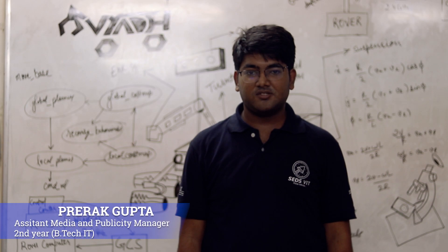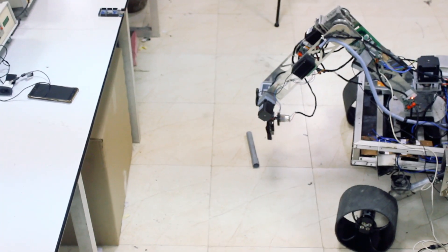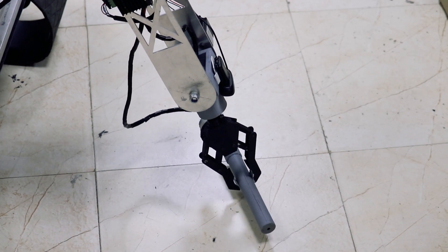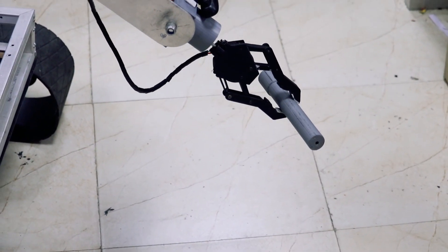The 3D printed end effector makes use of a 4-bar linkage mechanism that allows for precise gripping of various cases. Detection of the case is carried out via color masking using OpenCV.